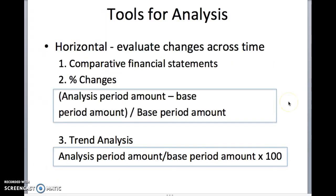Now, let's focus on horizontal analysis. These are the items wherein you can compare companies' financials across time. You can use comparative financial statements to see the different values in, let's say, year 2014 versus the peso values in 2015. Another way to go about horizontal analysis is to look at the percent changes. The formula is: analysis period amount minus base period amount, over the base period amount.